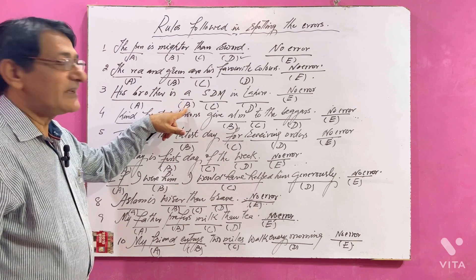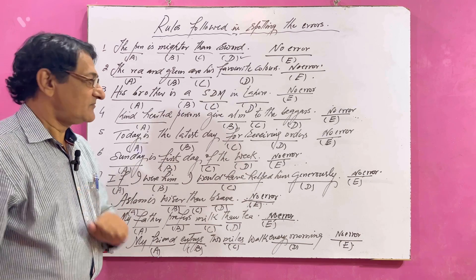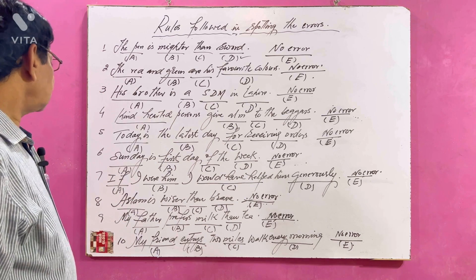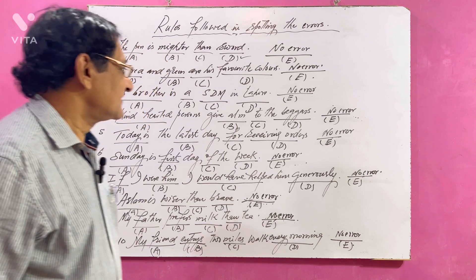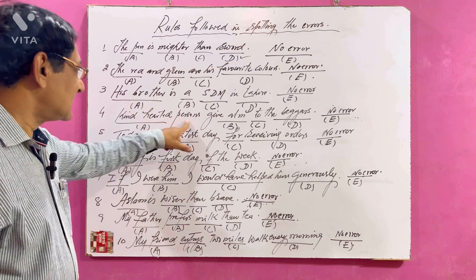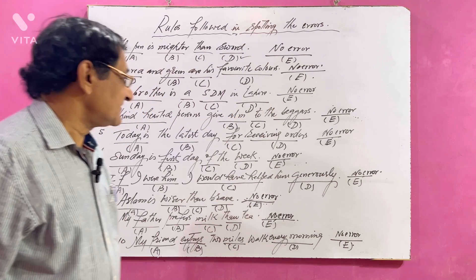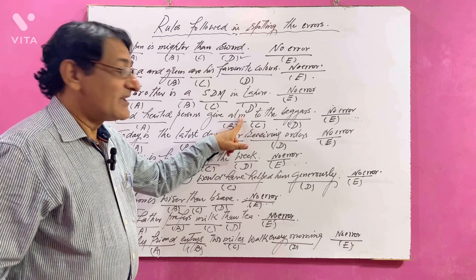Kind-hearted persons give arm to the beggars. Where is the mistake here? Try to find out. Yes there is one and that's 'arm'. It is always written in plural form 'arms', like pairs of things - scissors, trousers, arms.